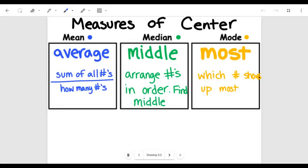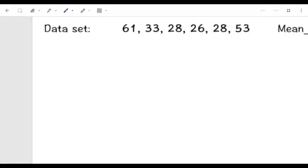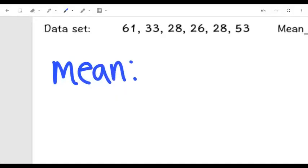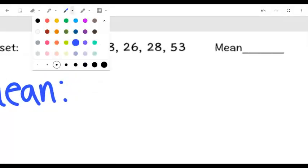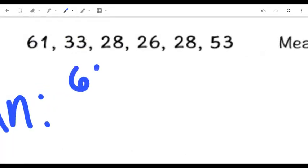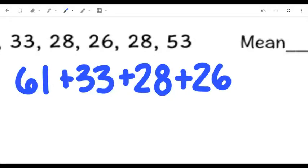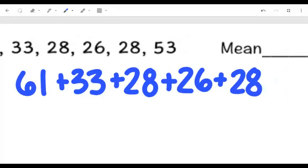So let me go back real quick. We're looking at the mean first, which is the average. So we have the sum of all the numbers divided by how many numbers. The first thing we want to do, if we're going to find the mean, is that we want to add all of these numbers together. So it's going to simply look like this: 61 plus 33 plus 28 plus 26 plus 28 again plus 53.